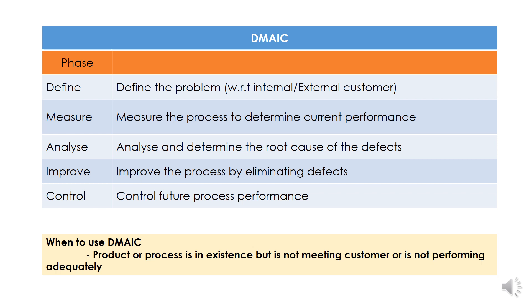In the Improve phase, we create an action plan and implement it with respect to the root cause. We implement the action plan. In the Control phase, we sustain the actions over a period of time and control future process performance. This is the DMAIC approach.